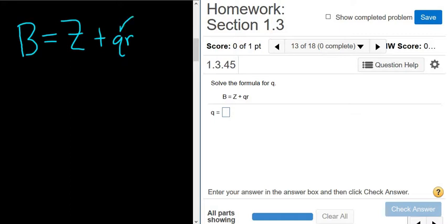And we have to solve for little q. So little q, we need to get it by itself. So we'll start by isolating this piece. So we can do that by subtracting Z from both sides.